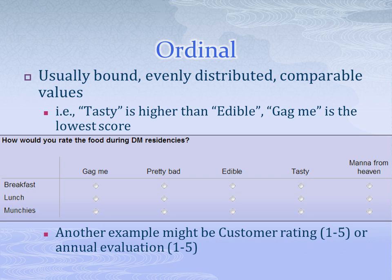Ordinal variables capture data using a spectrum of values, usually ordered from low to high, often spaced at even intervals. For example, 'pretty bad' is one value higher than 'gag me.' These variables have some intrinsic value, so someone responding with 'tasty' is indicating they feel the food is more delicious than someone who responds with 'edible.' Thus, the values on the spectrum are meaningful levels of the concept about which we desire data.